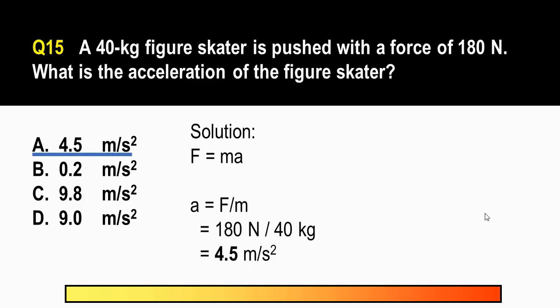Alright, so that's the last question. And the correct answer here is letter A. 4.5 meter per second squared. So, recall in our lesson on laws of motion, force is equal to mass of the object multiplied by its acceleration. So, to get the acceleration, we just divide the force that was applied with the mass of the object. So, here, the force is 180 newtons divided by the mass, which is 40 kilograms. So, we get 4.5 meters per second squared.